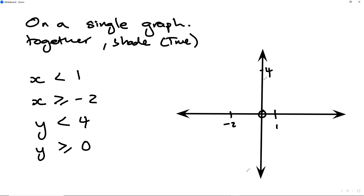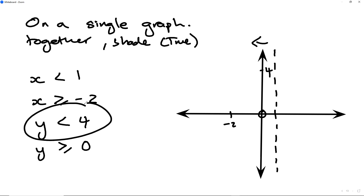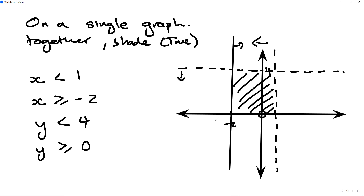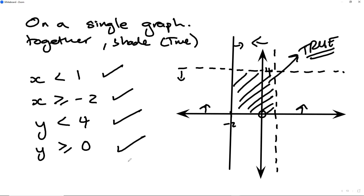Anything with x is a vertical line, so x equals 1 is a broken vertical line — less than 1 shades on the left. y less than 4 is a dotted horizontal line; shade downwards because it's less than. x greater than or equal to negative 2 means a solid vertical line at negative 2, shading to the right. The region that fulfills all three inequalities together is less than 1, greater than or equal to negative 2, less than 4, and also greater than or equal to 0. That overlapping region is the true region, shaded on the graph.